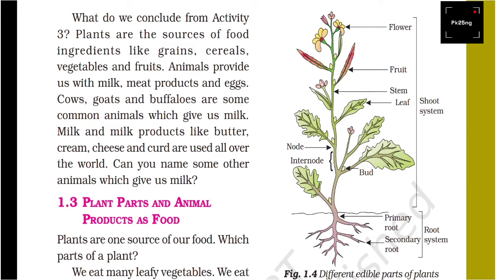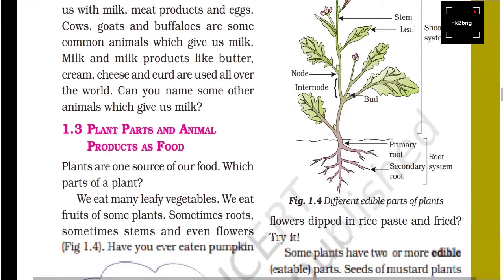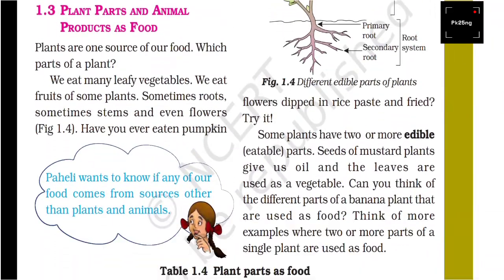These edible parts include flower, fruits, stem as food, and leaves, among many other things. Some plants have two or more edible parts which we can eat.